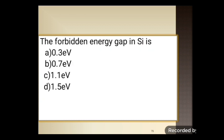Next question: the forbidden energy gap in silicon is — option A: 0.3 eV, option B: 0.7 eV, option C: 1.1 eV, option D: 1.5 eV. The forbidden energy gap in silicon is 0.7 electron volt. Option B is the correct answer. This question is frequently asked in most exams, and these questions are from previous exams and may be asked again.